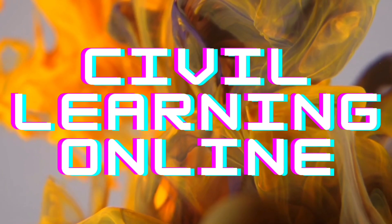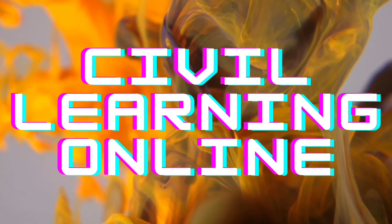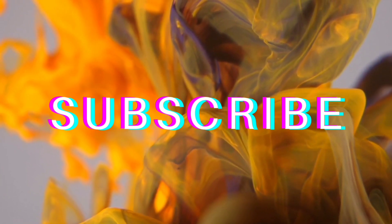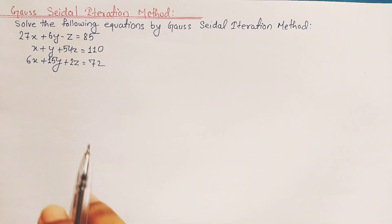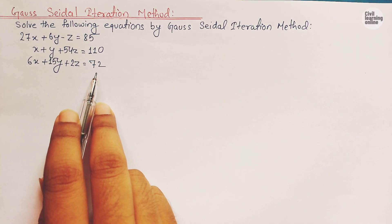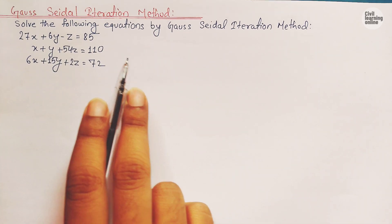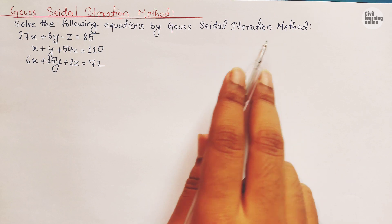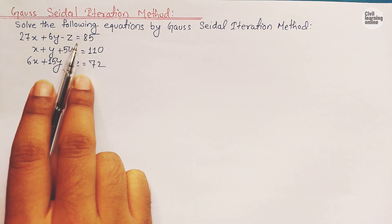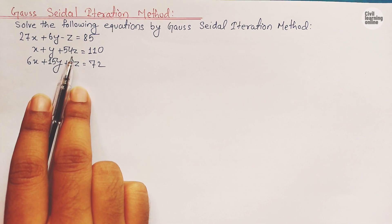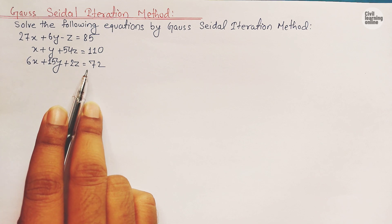Let's begin the solution of this problem based upon the Gauss-Seidel iteration method. We are asked to solve the following equations: 27x + 6y - z = 85, x + y + 54z = 110, and 6x + 15y + 2z = 72.